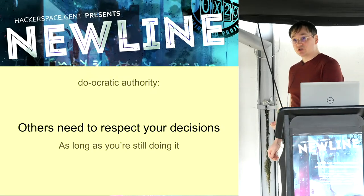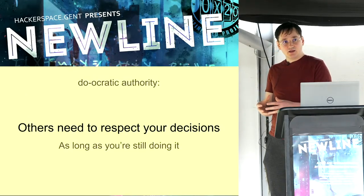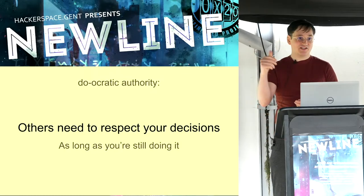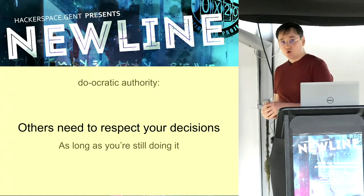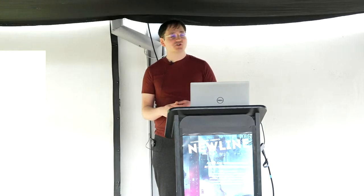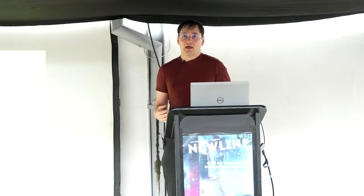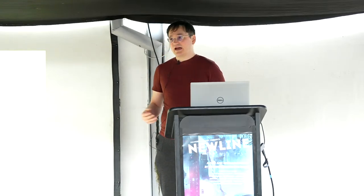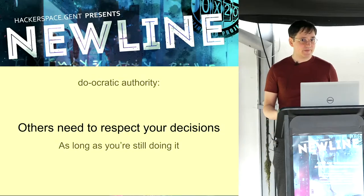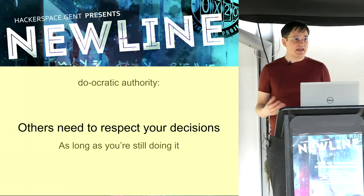Doocracy means there is authority — it's not an organization without authority — but you only have authority about the things that you do. When you stop doing them, you stop having authority. For example, we have a bar system that tallies how much you spent. At a certain point somebody built a whole new system, then later didn't have energy and stopped maintaining it — at that point they lost authority over it, and somebody else came in and built a new bar system. When you stop doing things, other people are free to take over.